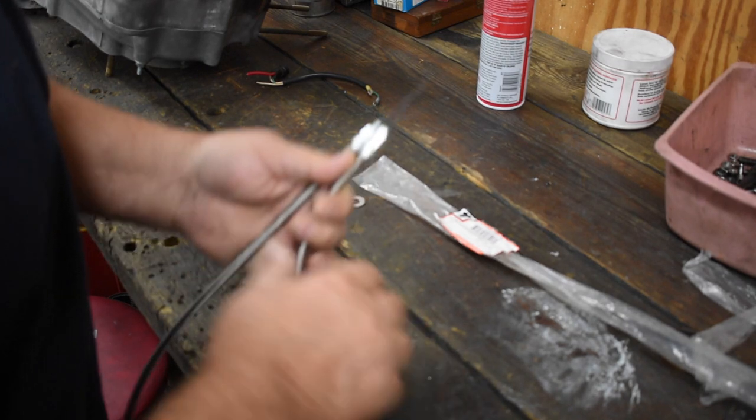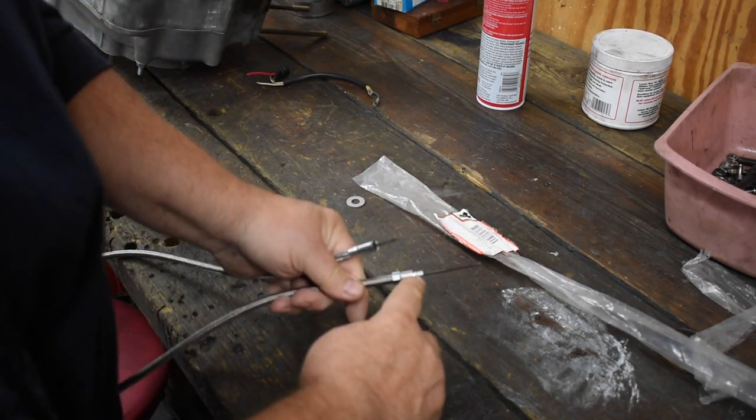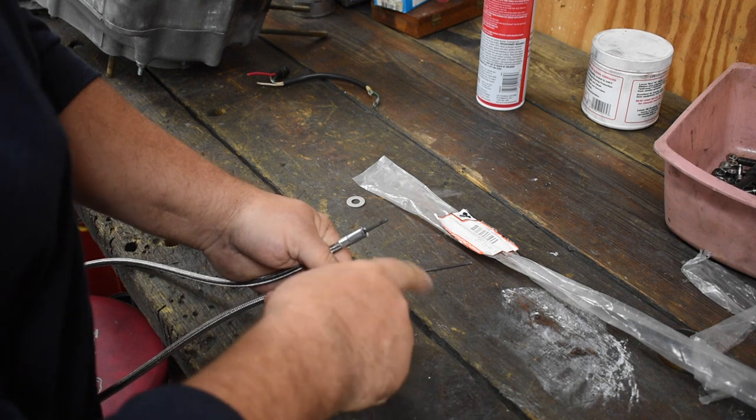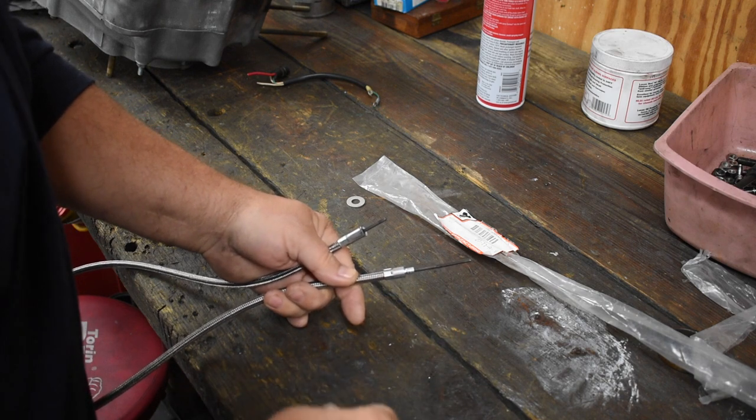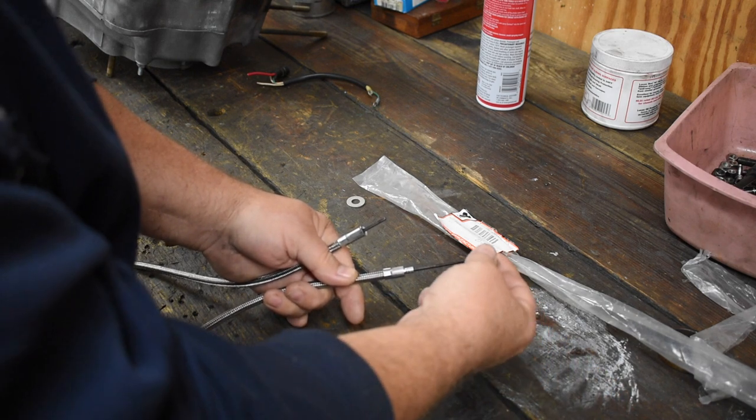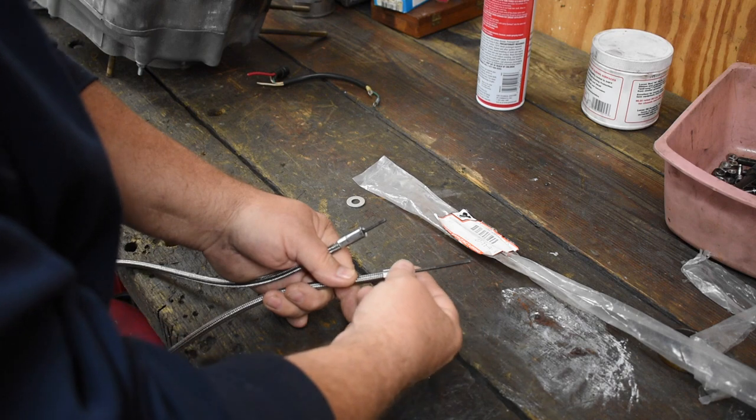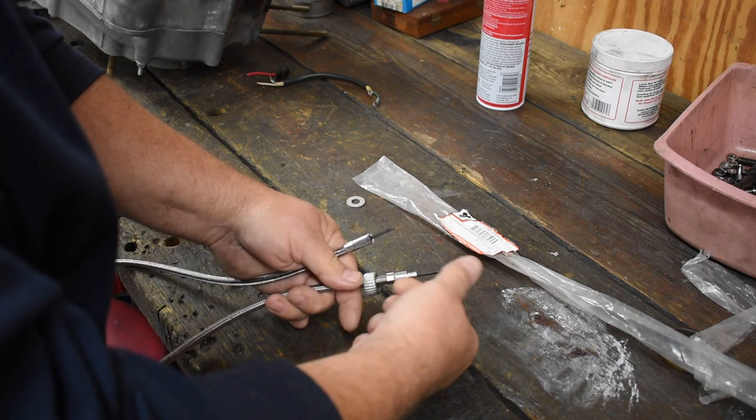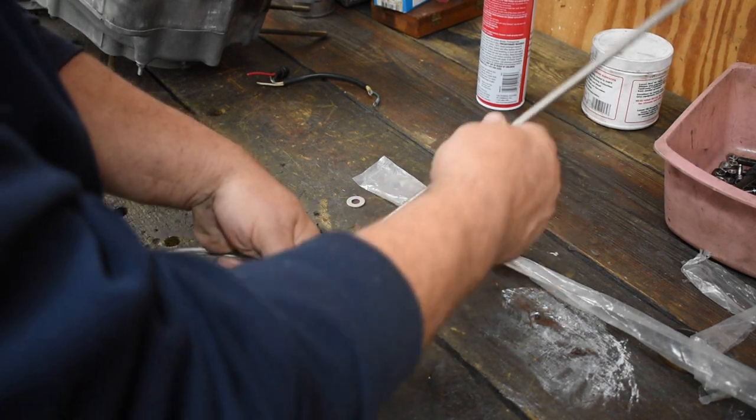The way these things are supposed to work is like this. This is the bottom of the cable, it's got threads on it, screws into the drive on the front wheel. You're supposed to be able to take the nut, before you install it on the bike, install the nut over the bottom ferrule, slide it up the cable.